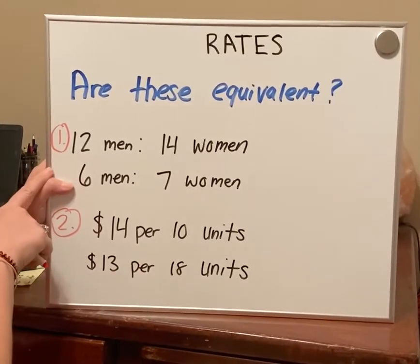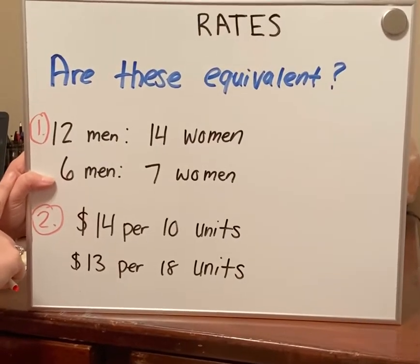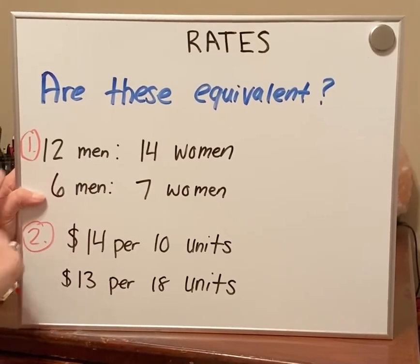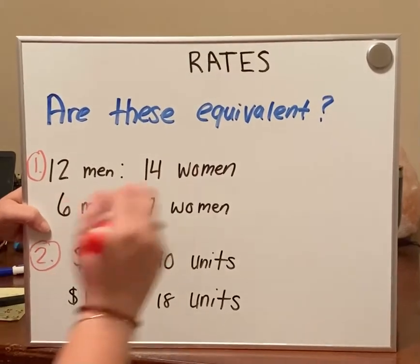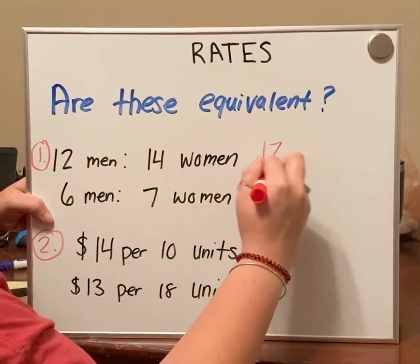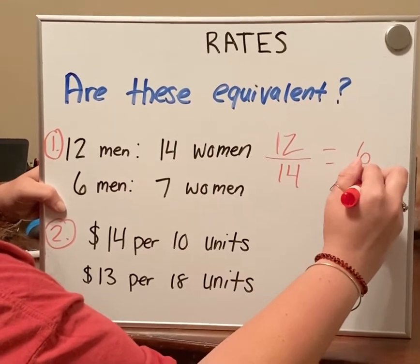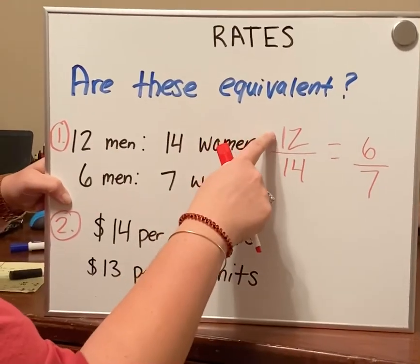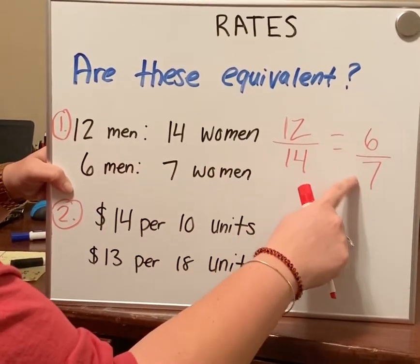So this first problem says you have 12 men to 14 women and 6 men to 7 women. You're going to make a fraction just like we did in the problems before. So we have 12 over 14 equals 6 over 7. So we have men over women and men over women.